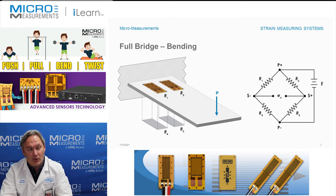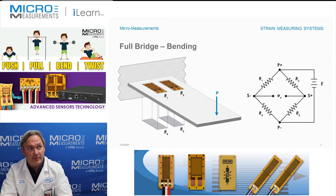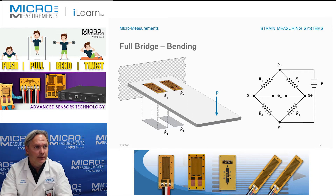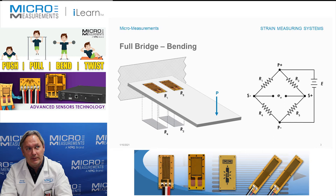The gauges are two on the top and two on the bottom. They're all effectively positioned at the same distance away from the fixed end of the beam. You'll see the Wheatstone bridge where we wire those all in together. R1 and R3 are on the top, and R2 and R4 are on the bottom.